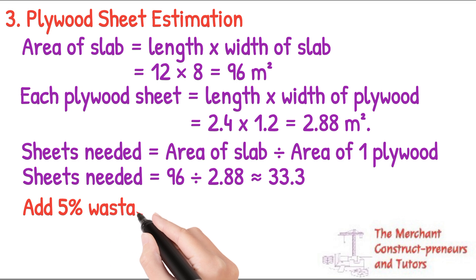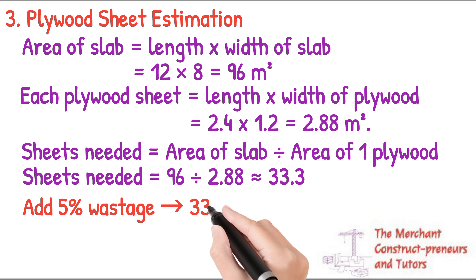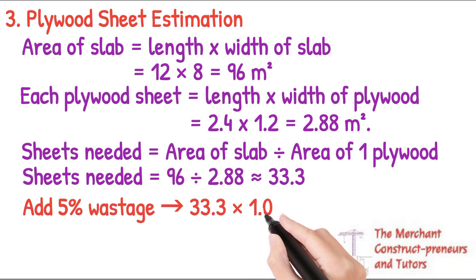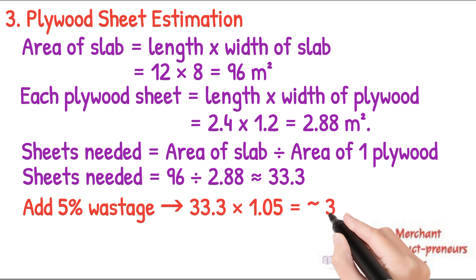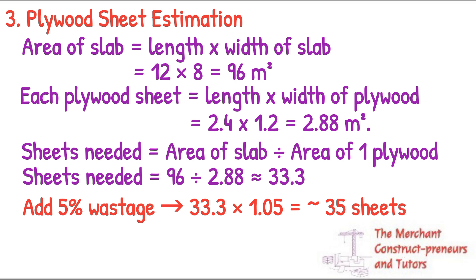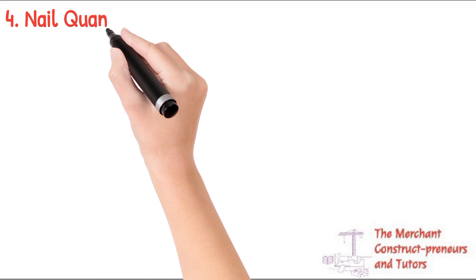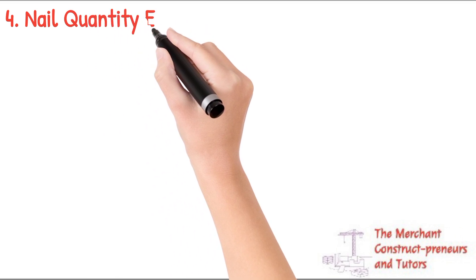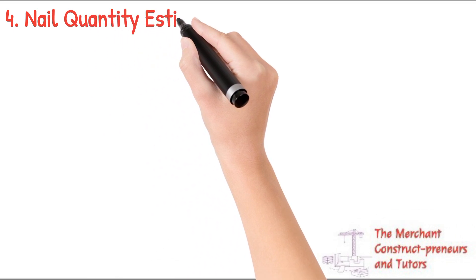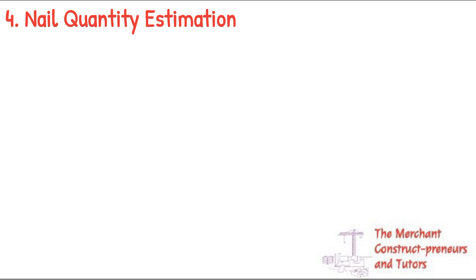We need to add 5% for wastage, because not all parts will contain full plywood — some parts will just be a fraction and require cutting. So 5% of 33.3 sheets gives us the final total, which rounds up to approximately 35 sheets.